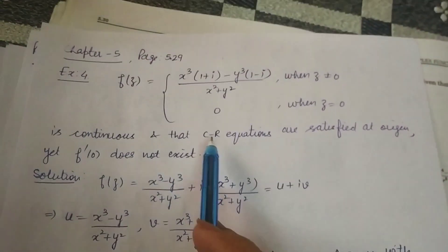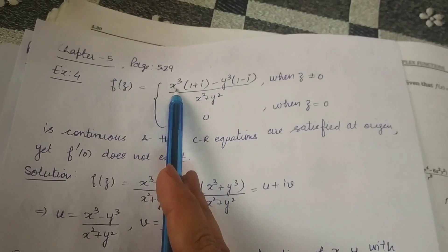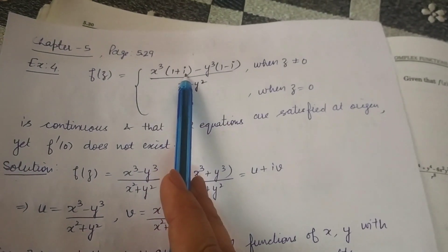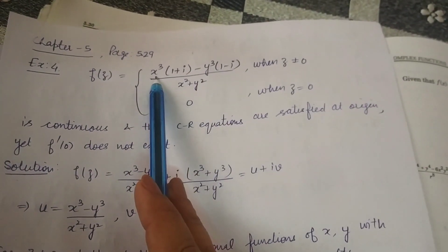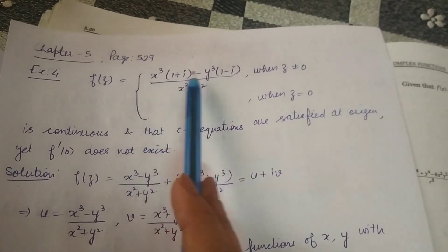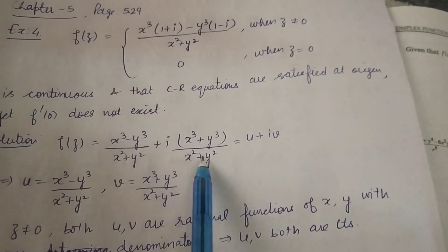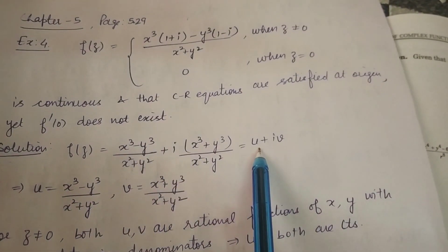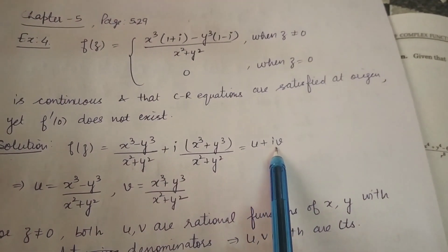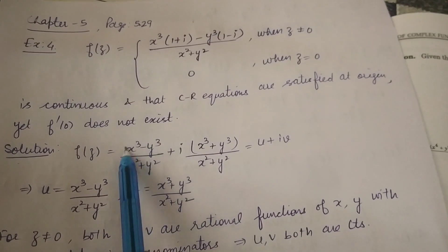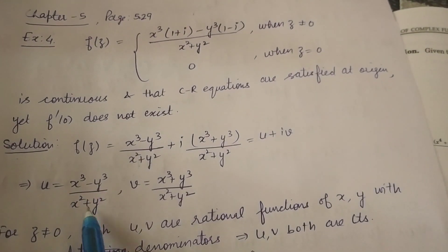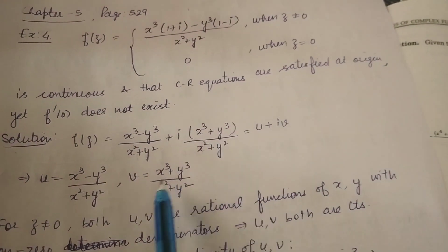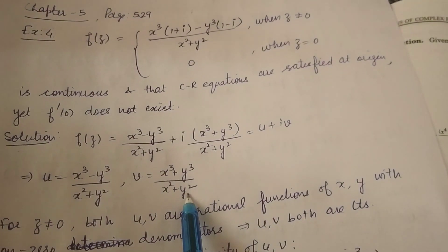First, we identify the real and imaginary parts of this function. The real part is u = (x³ − y³) / (x² + y²), and the imaginary part is v = (x³ + y³) / (x² + y²). So f(z) = u + iv.